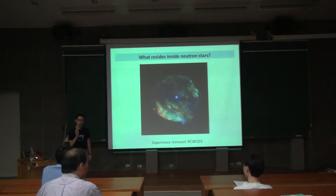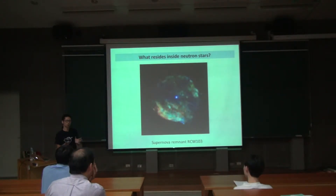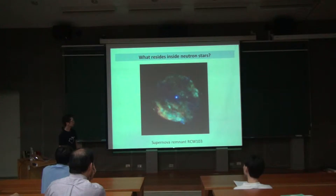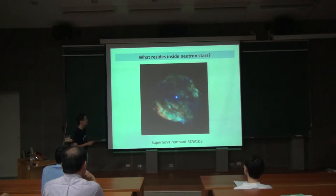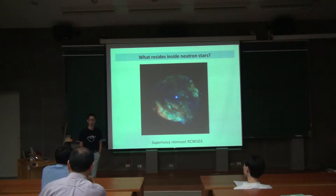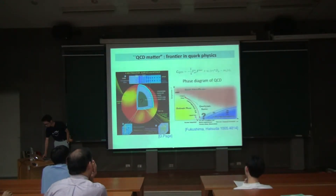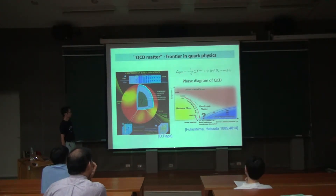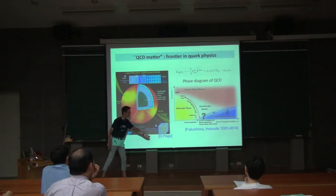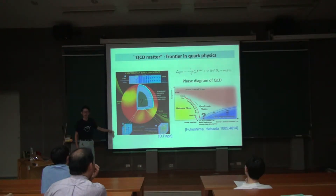If we believe that QCD — the theory which governs quarks, the matter which constitutes our body — is true until that density region, then the problem is how we can solve QCD for such very high density. And that's really the frontier of the QCD matter problem. This is a picture I found online, and you can see a cartoon picture of a neutron star. The radius of this neutron star is about 10 km, and the mass is almost the same as the mass of the sun.